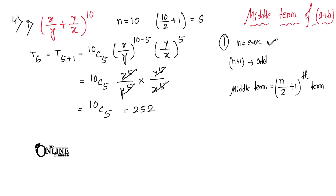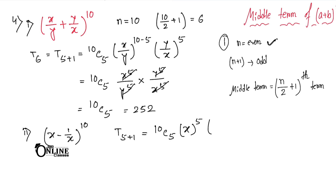Problem 4(ii): (x − 1/x)^10. Again T6 = T(5+1) = 10C5 · x^5 · (−1/x)^5. The x terms cancel but the minus sign remains, so the answer is −10C5 = −252.